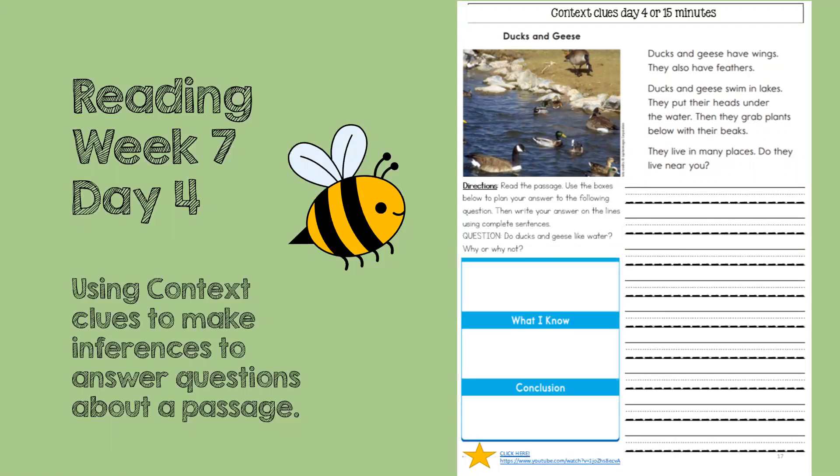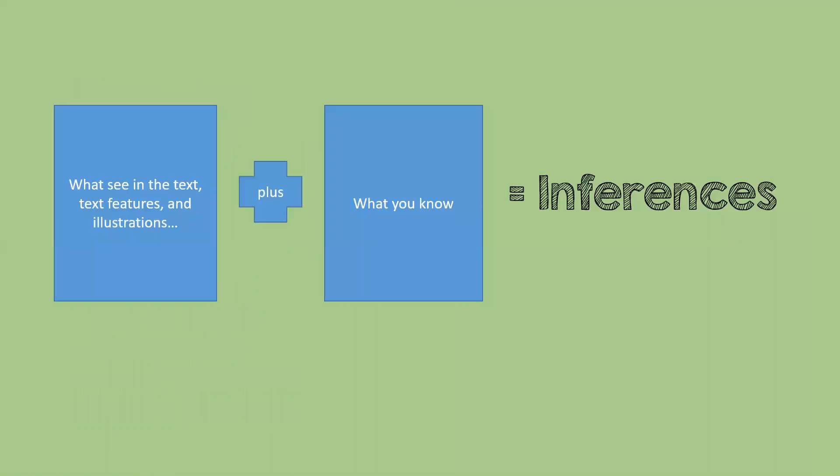For this page, we will be using context clues to make inferences to answer questions about a passage. What's an inference? An inference is what you see in the text, including the text features and any illustrations on the page, plus what you already know about the topic. When you put those two things together and think about them together, you have made an inference.